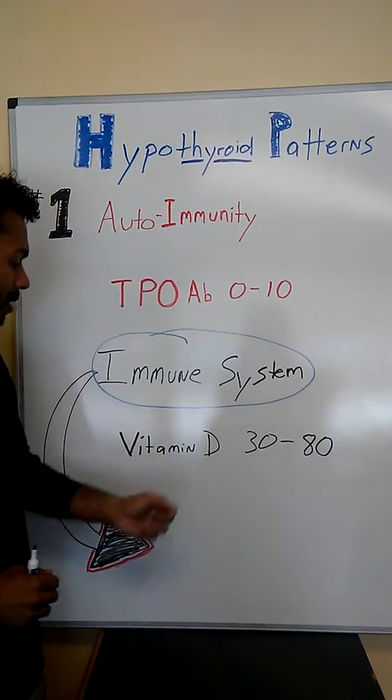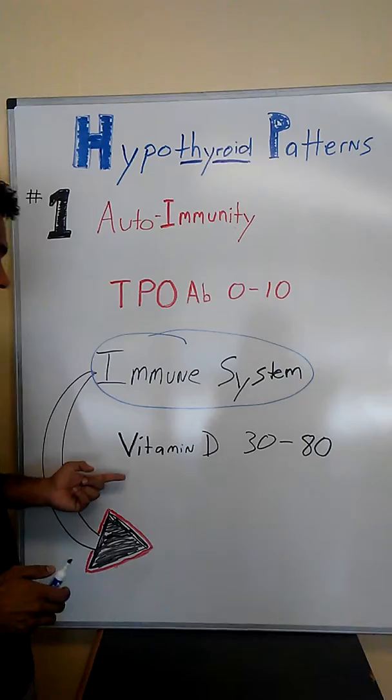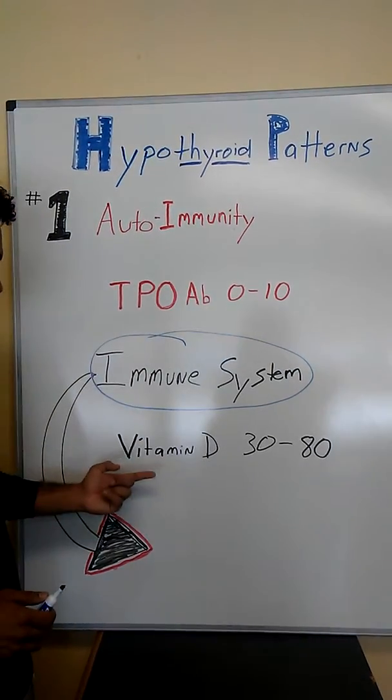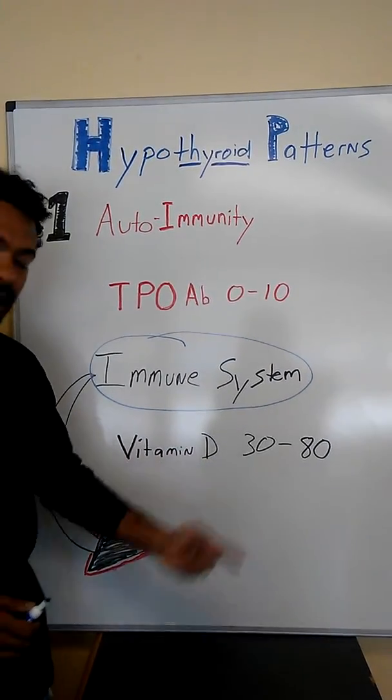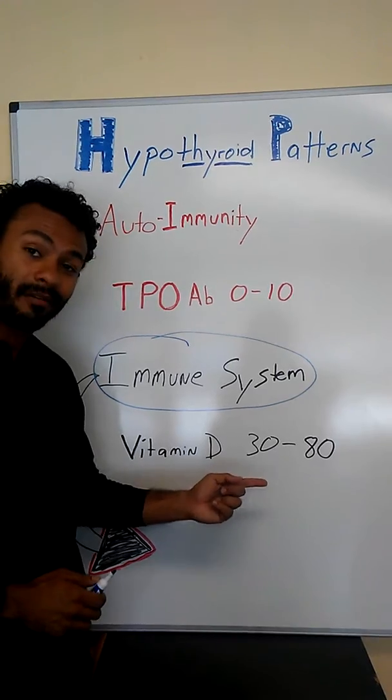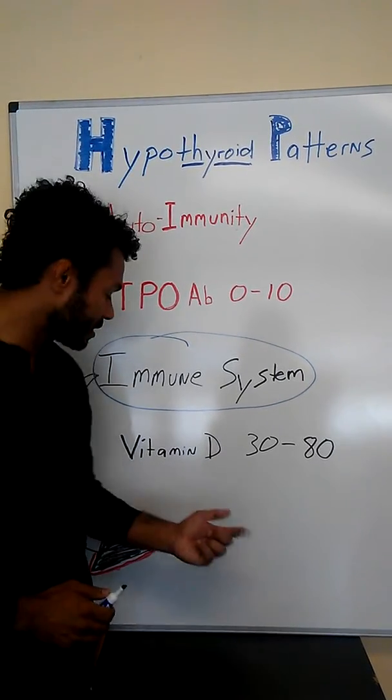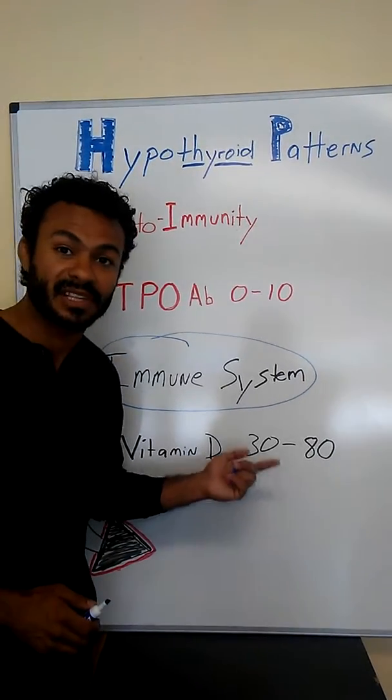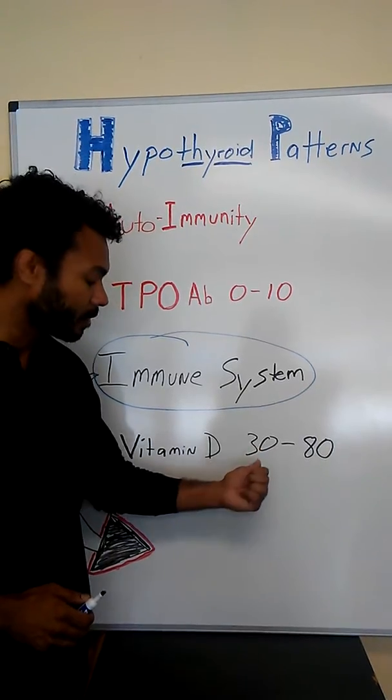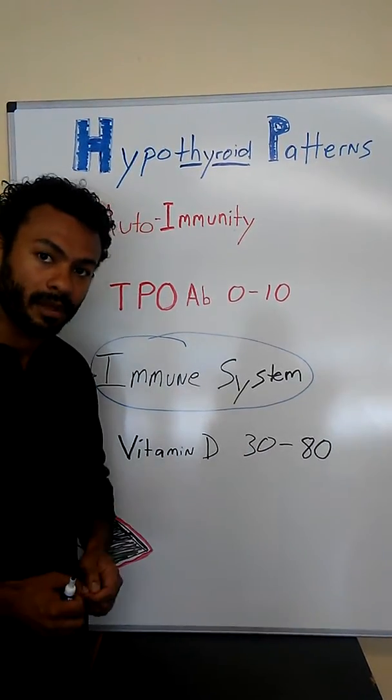You want to be able to boost the system up. One of the key markers you're going to want to test for besides the TPO antibodies is vitamin D. A lot of people have low vitamin D. Whenever I test this number, we're talking sometimes even in the single digits, but if you're below a 30, that's already a problem.